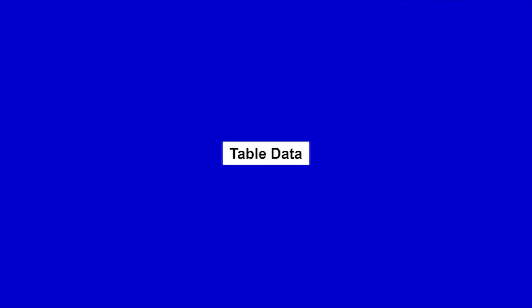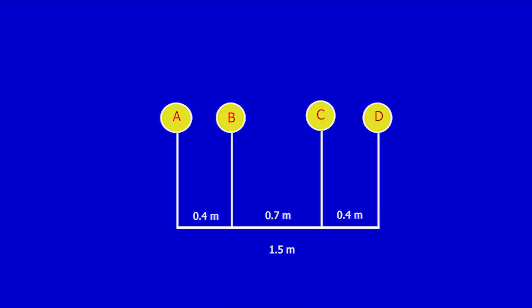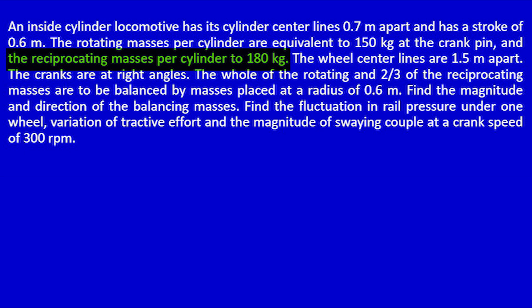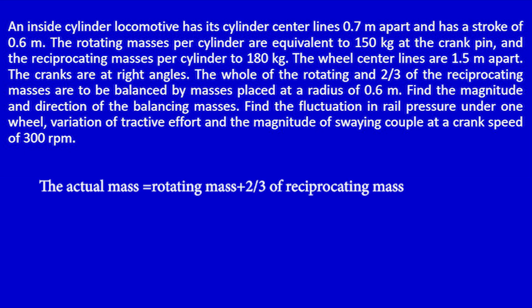Now I will proceed to the table to calculate force and couple values. From the displacement diagram, the order of the planes are A, B, C, D. I will mark these values in column 1. I can find mass and radius values from the problem statement. The rotating masses per cylinder are 150 kg and the reciprocating masses per cylinder are 180 kg. The actual mass equals rotating mass plus 2/3 of reciprocating mass: 150 plus 2/3 of 180, which equals 270 kg.